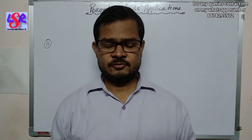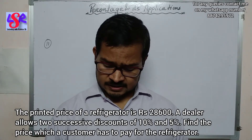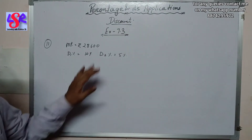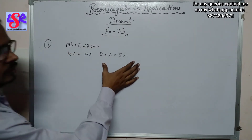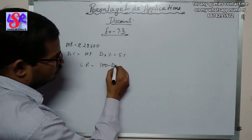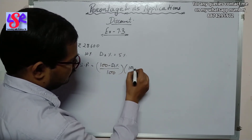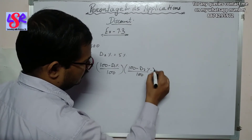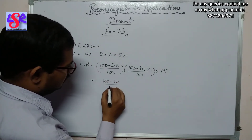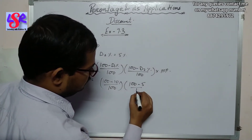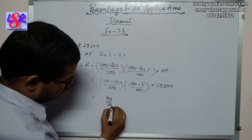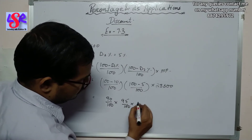In question 11, the printed price of a refrigerator is rupees 28,600. The dealer allows two successive discounts of 10% and 5%. Find the price the customer has to pay. SP = (100 − 10)/100 × (100 − 5)/100 × 28,600 = 90/100 × 95/100 × 28,600.